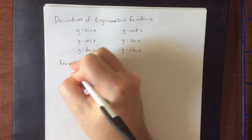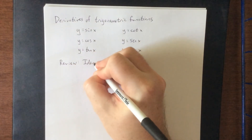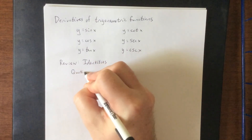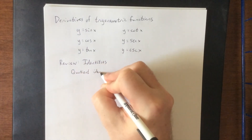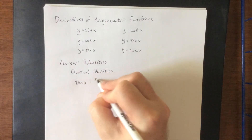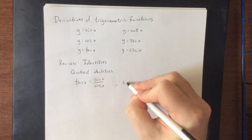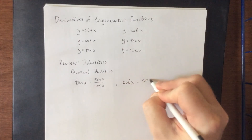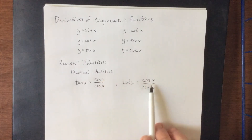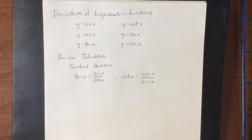We're also going to do a brief review of some identities that are going to be incredibly helpful along the way. These identities include, first off, quotient identities. Since we have access to the quotient rule, we might as well make use of them. The two you need to know are: the tangent of x equals sine of x divided by cosine of x, and cotangent of x equals cosine of x divided by sine of x. This means if we find derivatives for sine and cosine, we can use the quotient rule to derive the derivatives of tangent and cotangent.